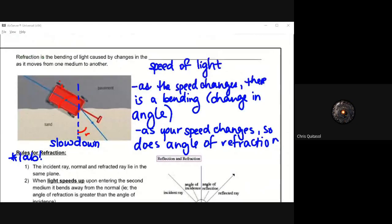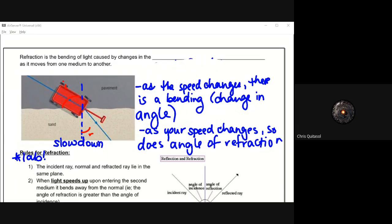So refraction is the bending of light caused by changes in the speed of light as it moves from one medium to another. And when you have something going from pavement to sand, that truck or that trolley or whatever it is that you're moving from pavement to sand, it slows down a bit. Right. As the speed changes, there's a bending. And as your speed changes, the angle of refraction changes as well.